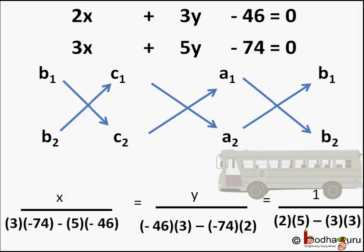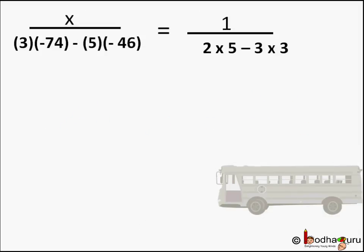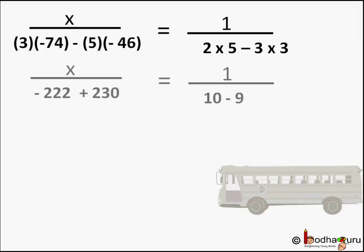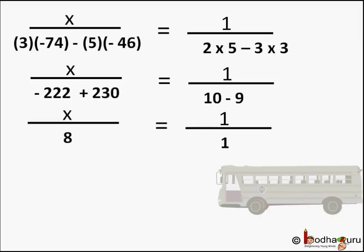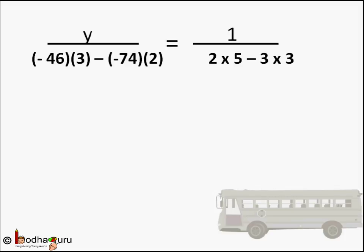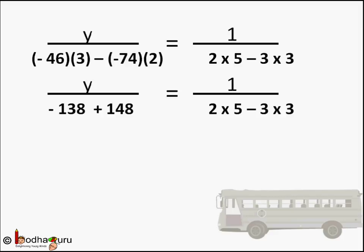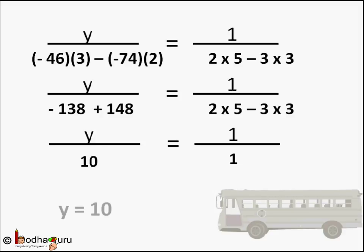So we get X divided by (minus 222 plus 230) equals 1 divided by (10 minus 9). That is X divided by 8 equals 1 divided by 1, so X equals 8. Same way for Y, it becomes Y divided by (minus 138 plus 148) equals 1 divided by (10 minus 9). So Y divided by 10 equals 1 divided by 1, therefore Y equals 10.